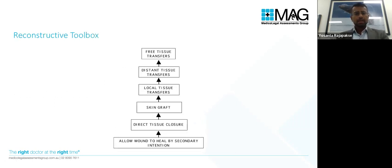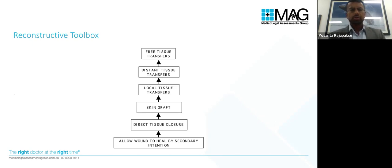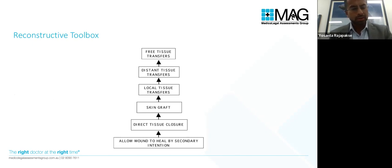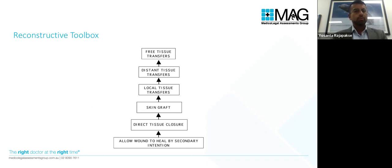The reconstructive toolbox has no real hierarchy. Our armamentarium ranges from allowing a wound to heal by secondary intention — meaning do nothing — to direct closure by suturing. If the defect is too big to suture, we use a skin graft; following that, local tissue transfer or a flap; then distant tissue transfer; and finally free tissue transfer, which pertains to microsurgical reconstruction.